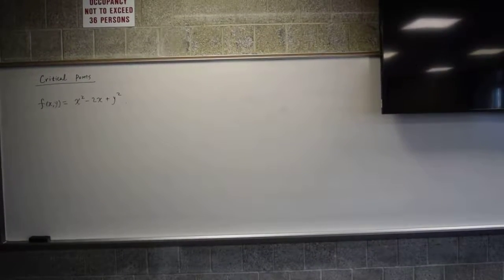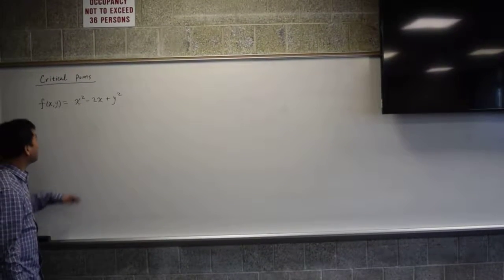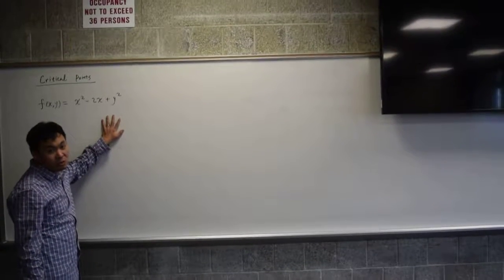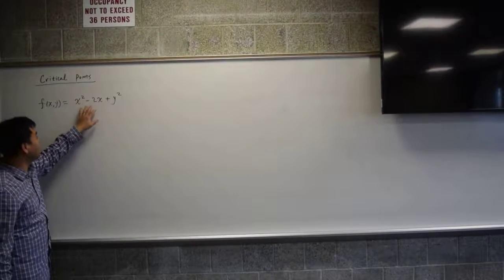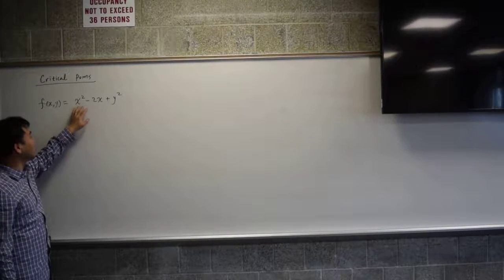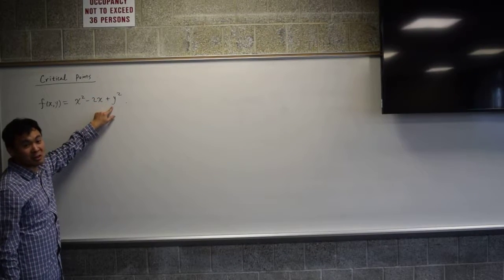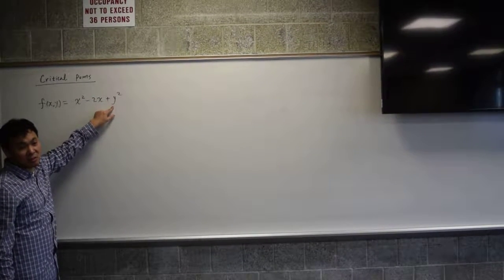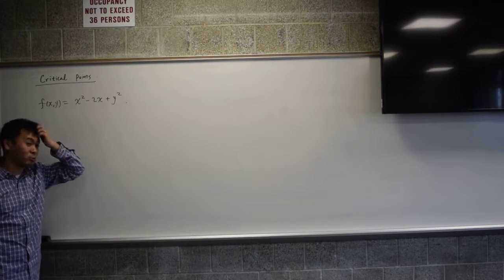Let's think about the maximum and minimum of this two-variable function. What we know about this function is that the maximum doesn't exist because you can make it as large as you want. The output can be made arbitrarily large by fixing one variable and increasing the other. For example, if I put zero into x and a million into y, a million squared is a trillion.